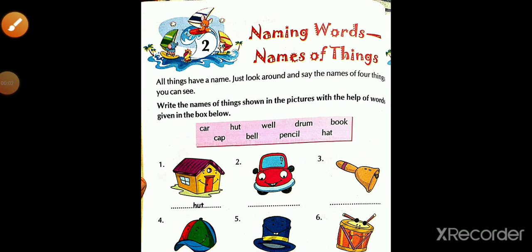Hello dear students, today we are going to learn Chapter 2: Naming Words - names of things. All things have a name. Just look around and say the name of four things you can see. First of all, I will explain what the names of things are and what naming words are. Students, you know everything has a name — look around you and say the name of four things.